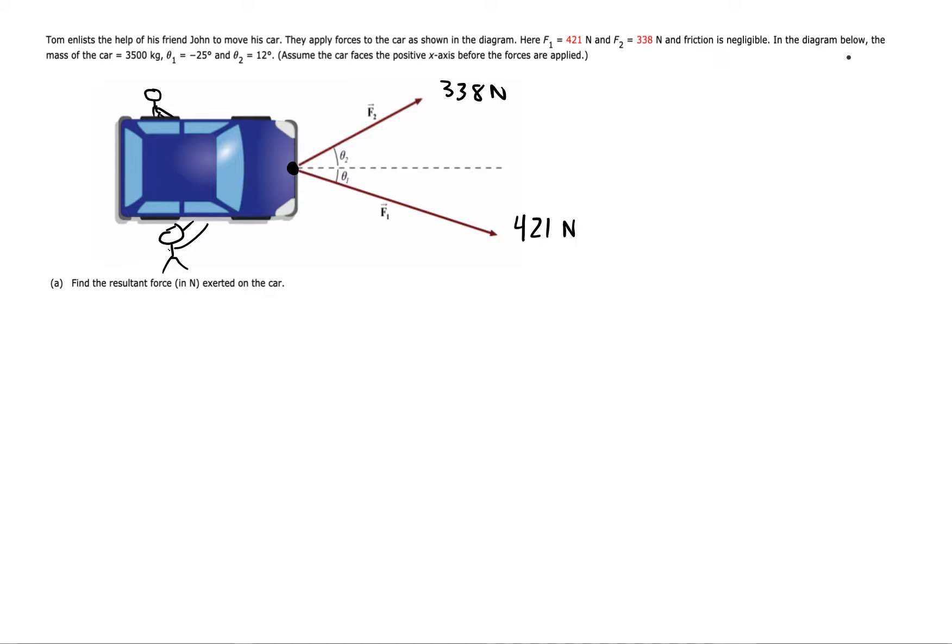We'll assume no friction and no other forces. The mass of the car is 3,500 kilograms. Theta one is negative 25 degrees and theta two is 12 degrees. We've got our positive X direction this way. The forces are not aligned with the X and Y axes, so you want to get them to be aligned by creating the components first.